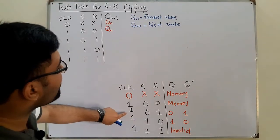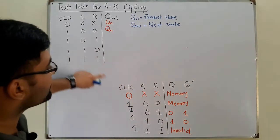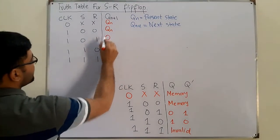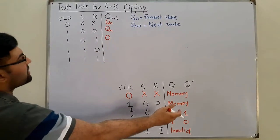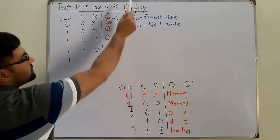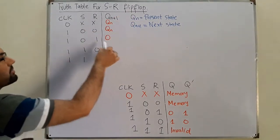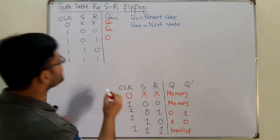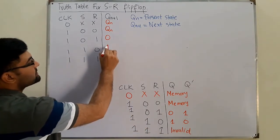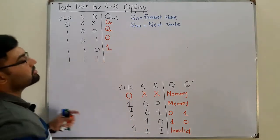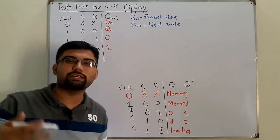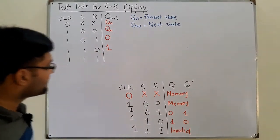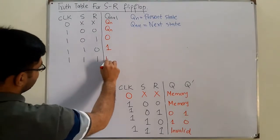When you have clock=1, S=1, R=0, the output is 0 — we write Q(n+1) and its complement. Zero's complement is one, so for the next state you have the output as 1, meaning the next state is 1. We write it as complement of zero. Finally, we have the invalid state.